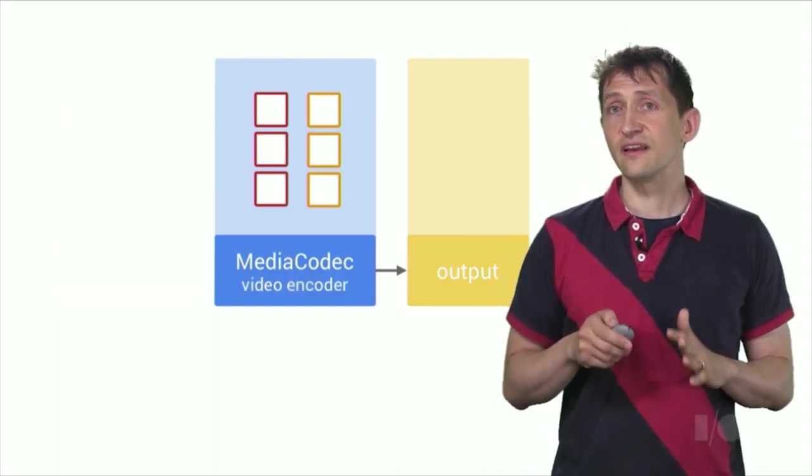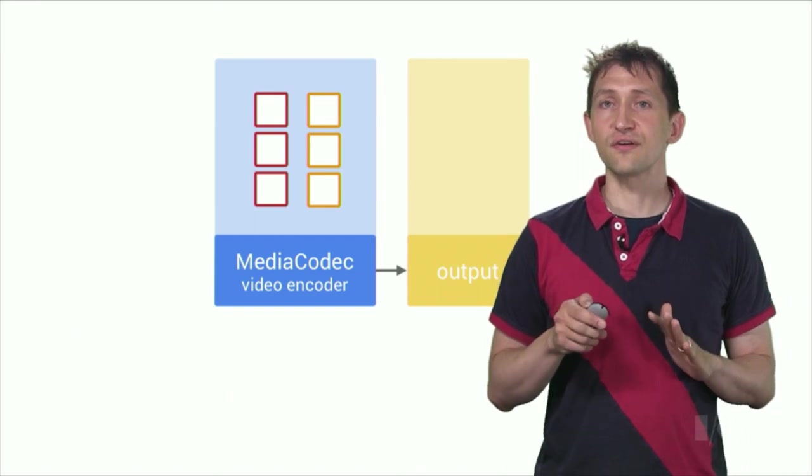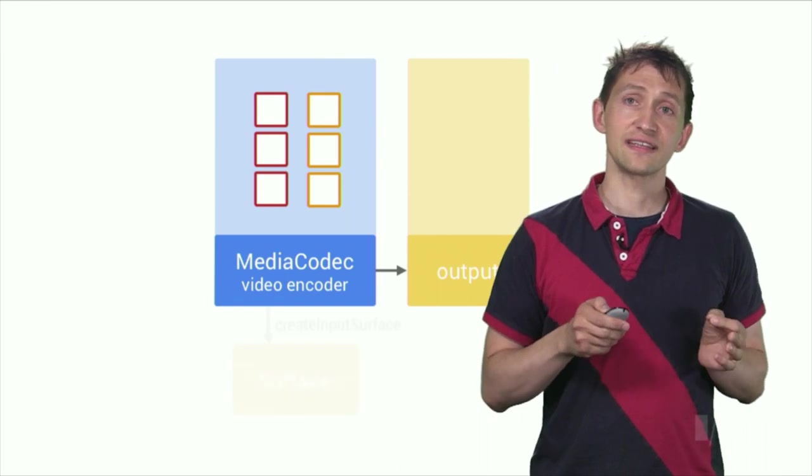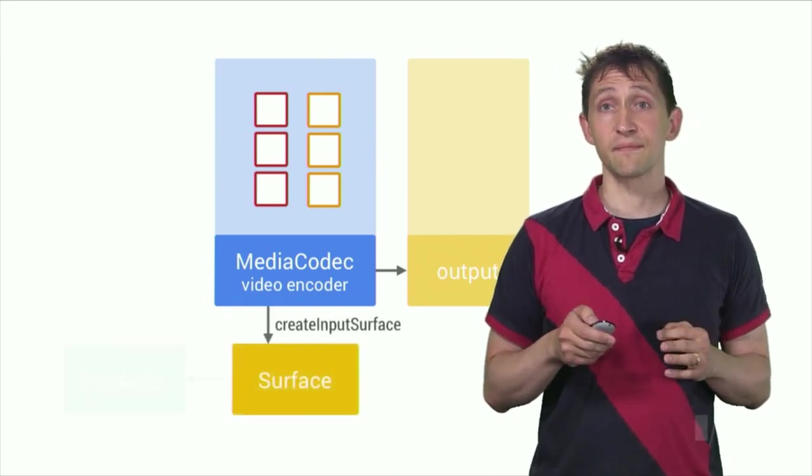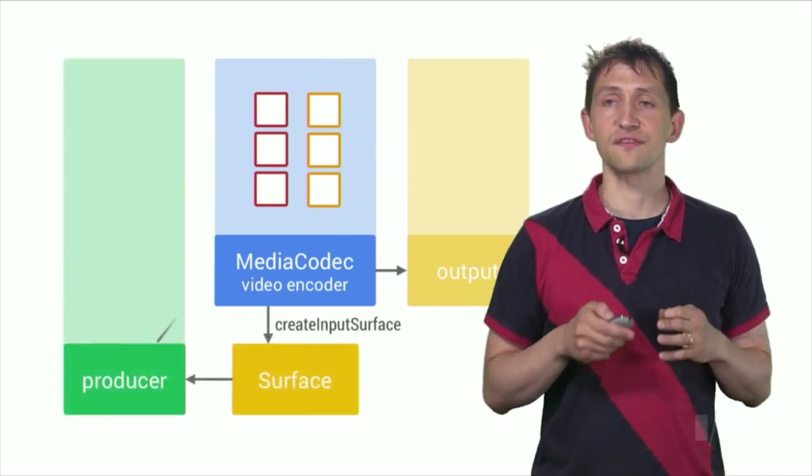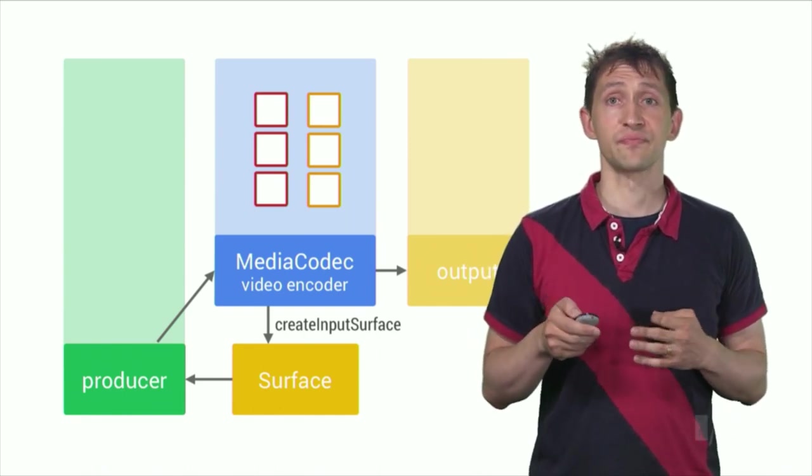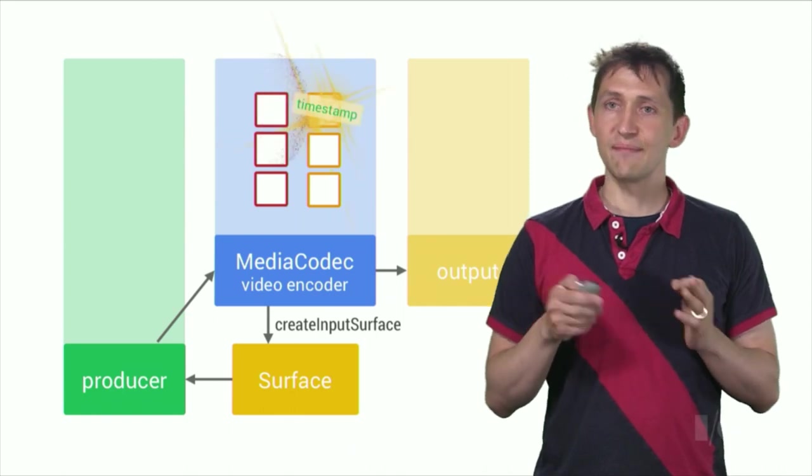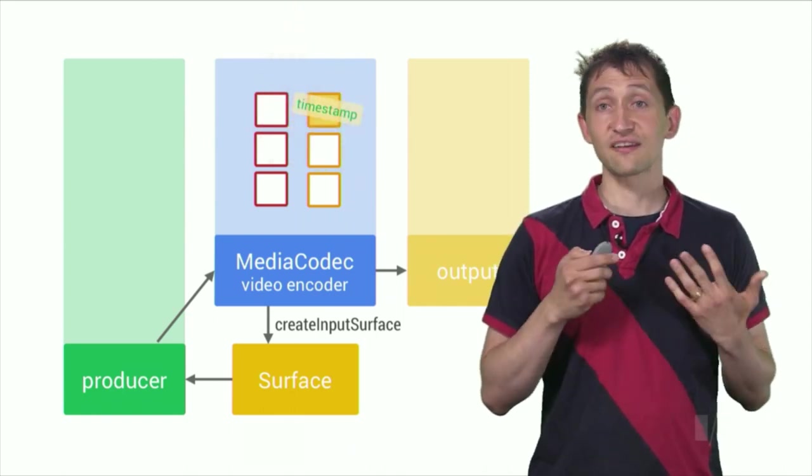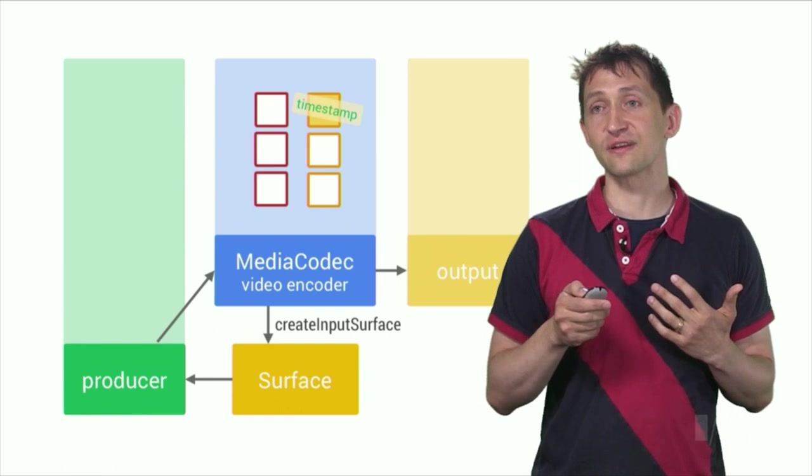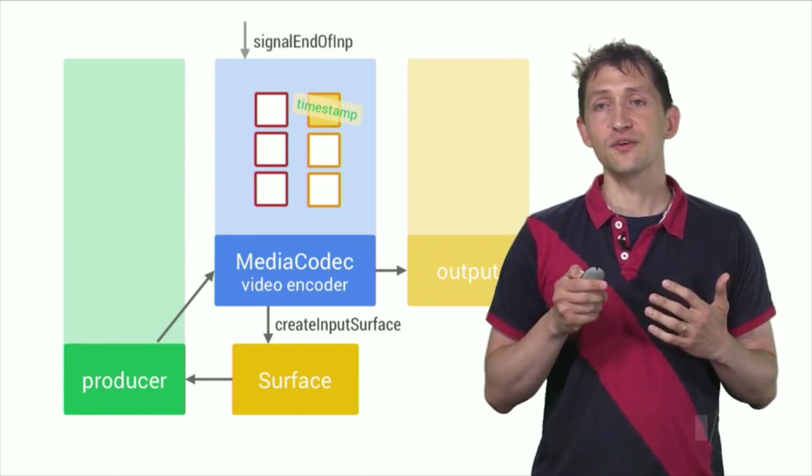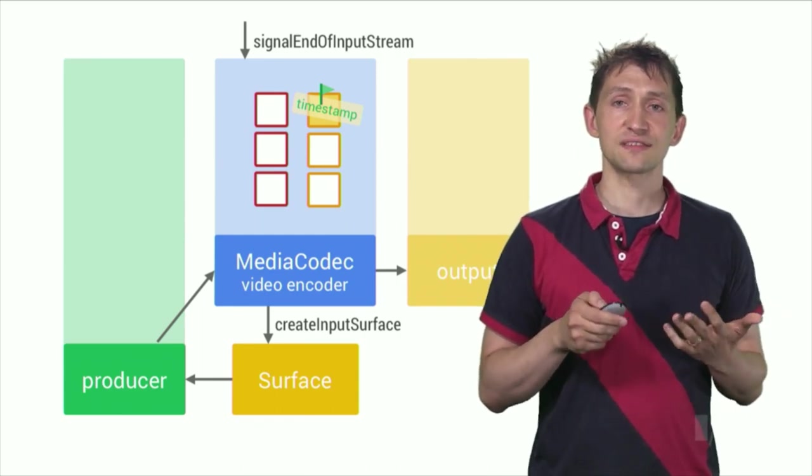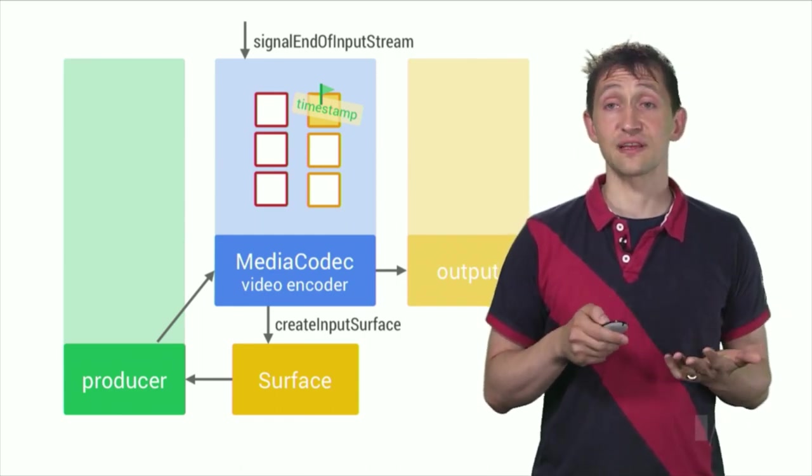As mentioned before, you can set up a video encoder to process hardware-accelerated surface input. You do this by calling createInputSurface after configure. Pass this surface to the producer of the video frames, which will now directly talk to the codec. Similarly to the normal operation, the producer will request an empty input buffer, fill it with data, apply a timestamp, and send it back to the codec for processing. When you want to stop the encoding session, call SignalEndOfInputStream to apply the EndOfStream flag to effectively the last frame received.